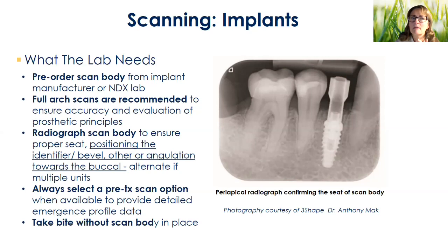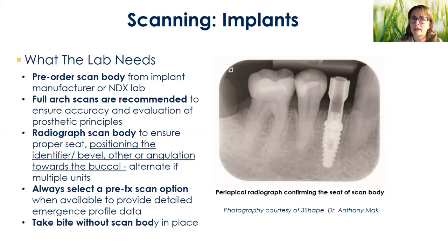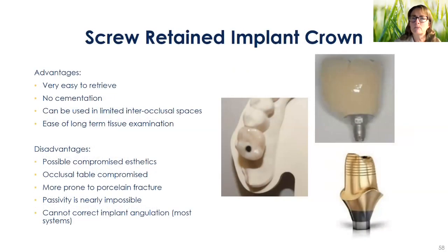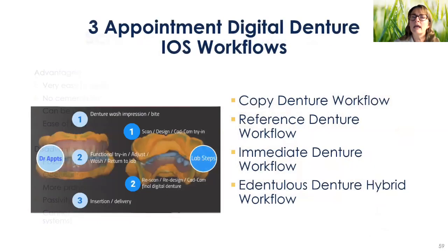90% of the time you will not be able to take the bite registration with the scan body in place — it's too tall occlusally, higher than the occlusal table. You'll need to be prepared to take the scan body out to get a quick bite registration before you put the healing abutment back in. You can scan for either cement-retained or screw-retained crowns.